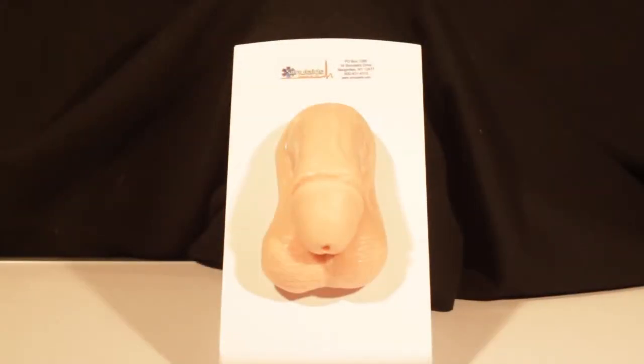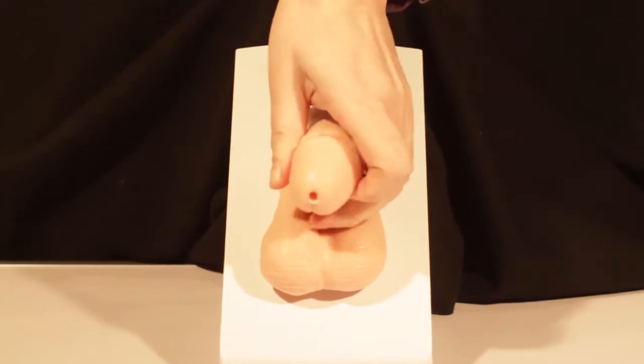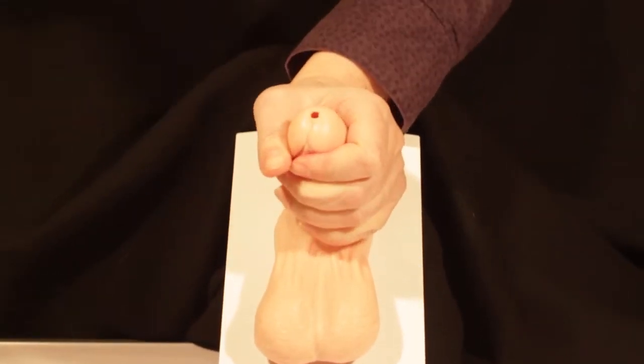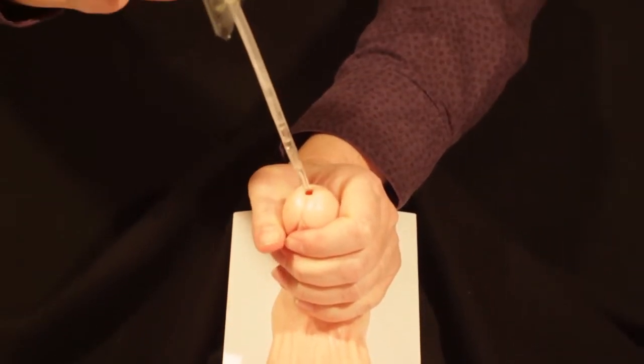Pull back the foreskin if applicable and hold your penis up towards your stomach. Gently insert the catheter into the urethra.